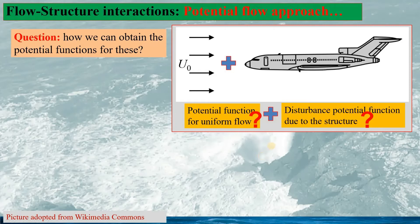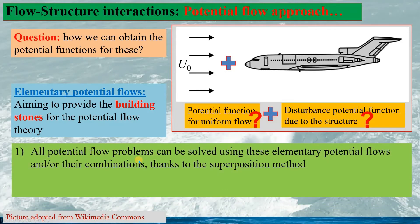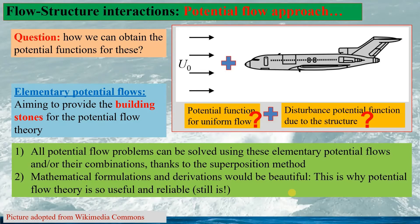We may ask how to obtain the potential functions for the uniform flow and the disturbance potential functions. This is the purpose of the elementary potential flows, which aim to provide the building blocks for the potential flow theory. All potential flow problems can be solved using these elementary potential flows and their combinations. Thanks to the superposition method, the mathematical formulation and derivations are elegant. This is why the potential flow theory is so useful and reliable, and still is.